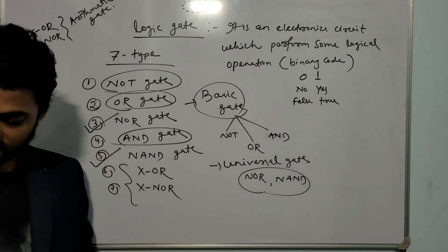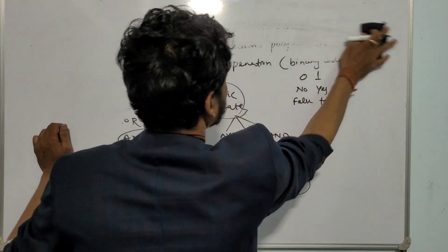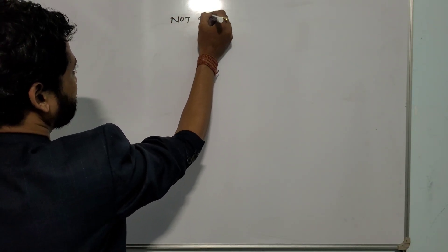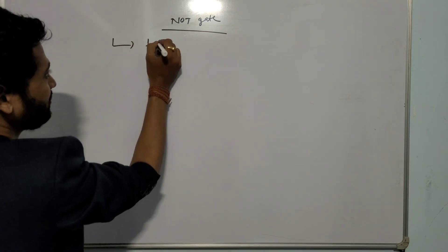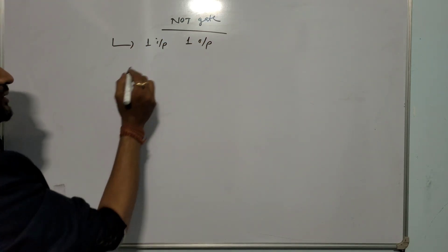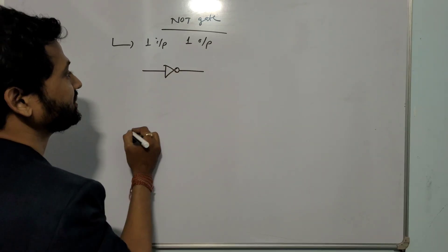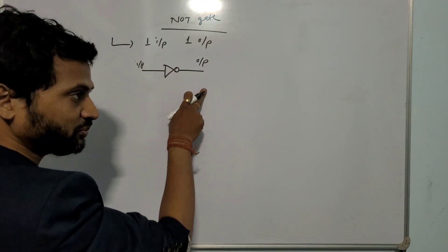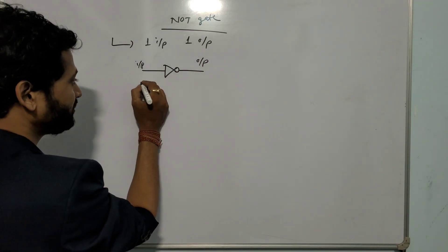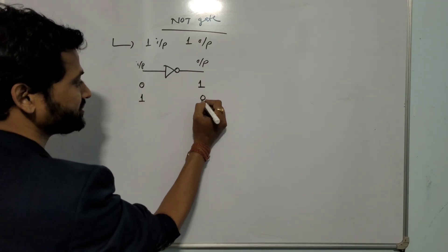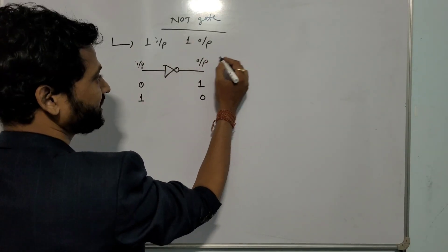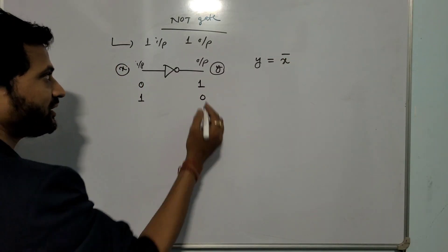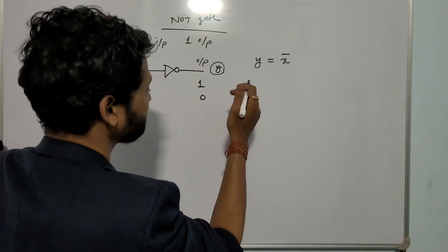The first gate is the NOT gate. The NOT gate has one input and one output. The symbol of the NOT gate has an input and an output. It is a one input and one output logical circuit. If input is 0, output will be 1; if input is 1, output will be 0. Mathematically, if input is x and output is y, we write y equals x bar. This can also be written in tabular form called a truth table.